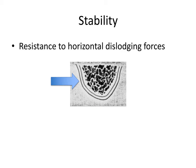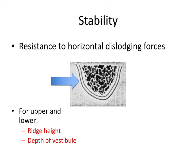The next term is stability, and this is resistance to horizontal dislodging forces, shown with this arrow here. For the upper and lower arches, the height of the ridge and the depth of the vestibule provide stability — that wall of tissue is what provides resistance to horizontal dislodging forces. From the denture point of view, the denture flange — that area that extends into the vestibule — is what provides stability, as it contacts those parts of the arch.